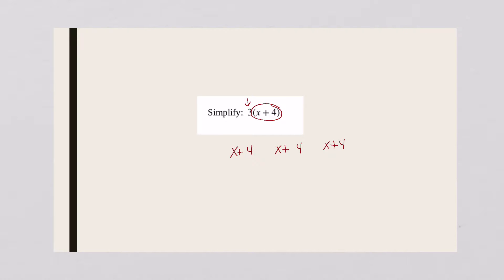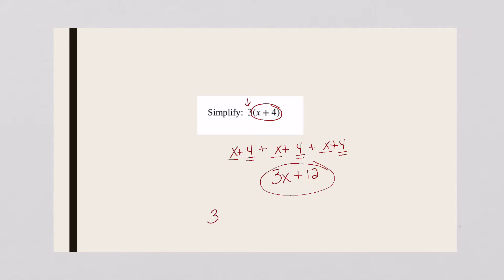Whenever you add these things together, you get x plus x plus x — you get 3x. Whenever you add the 4's together, the other like terms, 4 plus 4 plus 4 is 12. Now, the fast and easy way to do this problem is to simply multiply three times x and three times 4. So you get 3x plus 12.